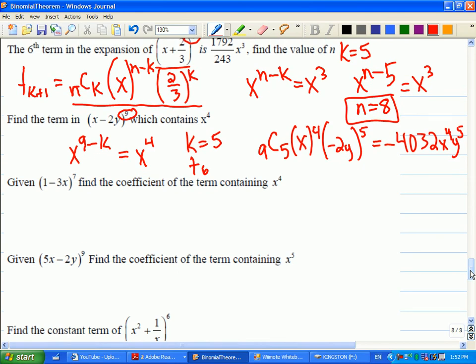Okay, sometimes instead of finding the whole thing, all we want is the coefficient. So let's talk about how we can come up with this. Given one minus three x to the seventh, find the coefficient of the term which contains x to the four. So again, which term are we looking for? The one containing x to the four. So which term number is that? Well, if you look at where these are placed in the formula, it's actually the second part that I'd be interested in.